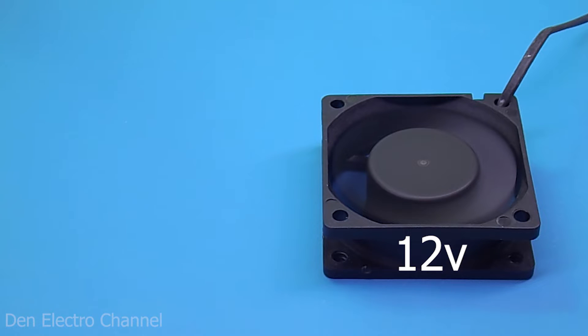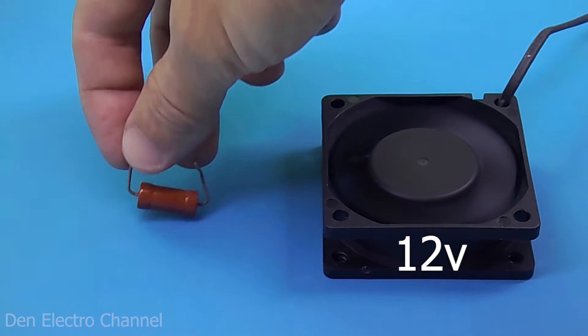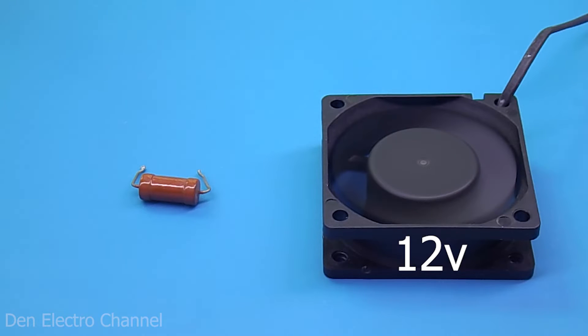Supply voltages can be different: 15, 18, 24 volts, and even 50. The most ordinary resistor can help us with this problem. With its help you can relieve excess voltage.